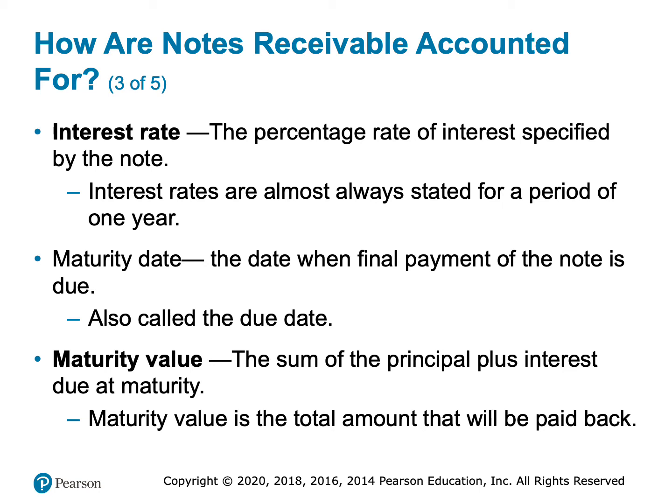The maturity date is the date when the final payment is made. In real life, we usually make monthly payments that include some principal and some interest; the date you make the last payment and pay off the entire loan is the maturity date. For simplicity, we won't be working with monthly payments. Instead, we'll loan someone money for a set period and they'll pay us back in one lump sum — the principal plus all the interest. That total amount paid back is called the maturity value.